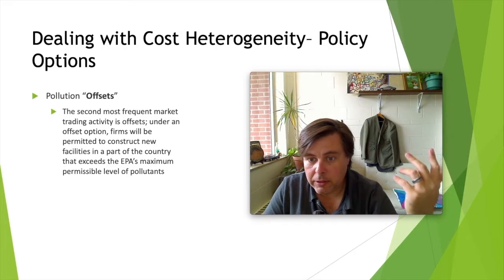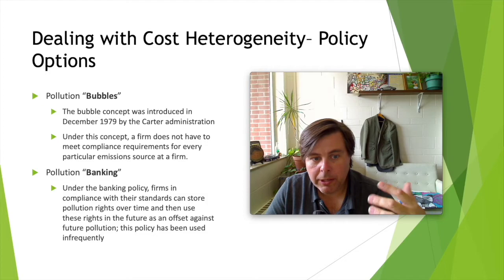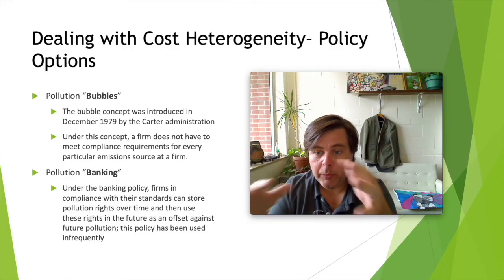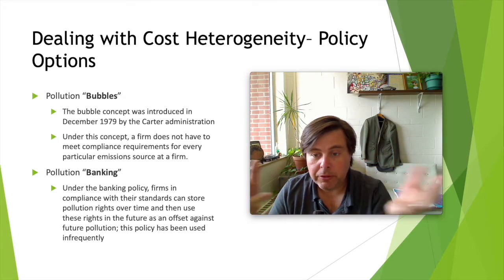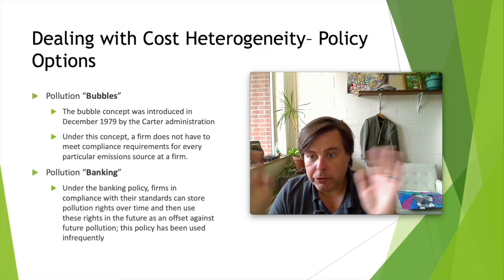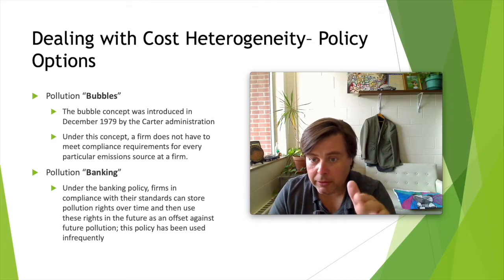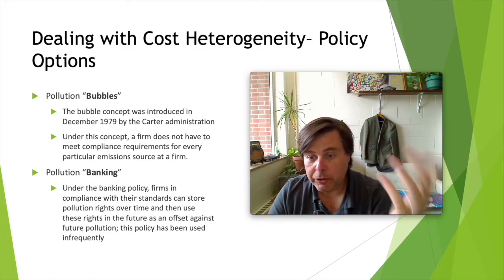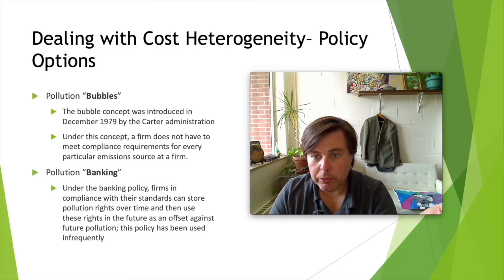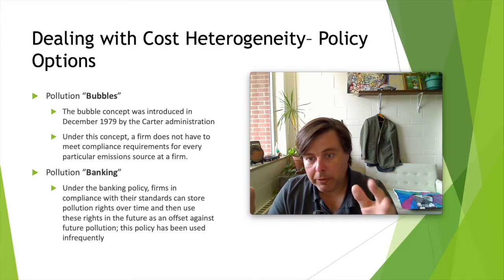The third idea is bubbles, where we pick a particular geography and say total emissions within that geography can't exceed X. For example, if total pollution is 1,000 units and there are 10 firms, each would nominally emit 100. But if some plants are very good at minimizing pollution and emit only 50, that allows another plant within the geography to emit 150, all things being equal. The concern here is with total emissions within a particular geography rather than at any individual source.